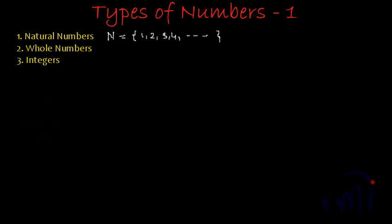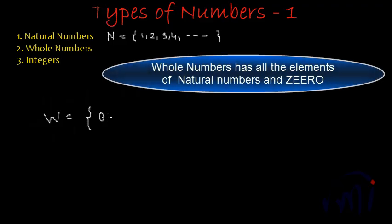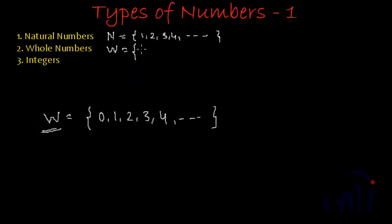Now we have the second variety, called whole numbers. Whole numbers are usually represented as W. This is nothing but the set of natural numbers with a 0 included. So the elements of this set start from 0 and then we have all the elements of the set of natural numbers: 1, 2, 3, 4 and again this continues. So W is the representation for the set of whole numbers and it starts from 0. In other words, if you include 0 in the list of natural numbers you will get whole numbers.